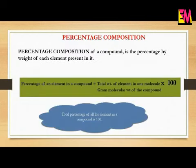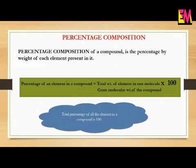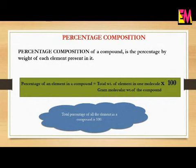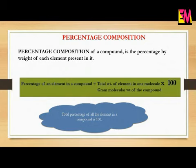The next thing we are going to study is percentage composition. Percentage composition of a compound means the percentage by weight of each element present in it. The total percentage of all elements in a compound is considered as 100, and our aim is to find out the percentage of each element present. The formula is: percentage of an element in a compound equals the total weight of the element in one molecule divided by the gram molecular weight of the compound, multiplied by 100.